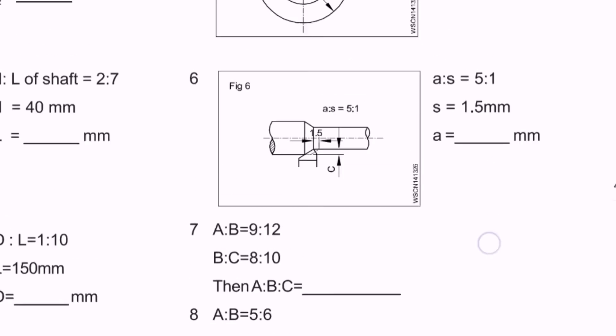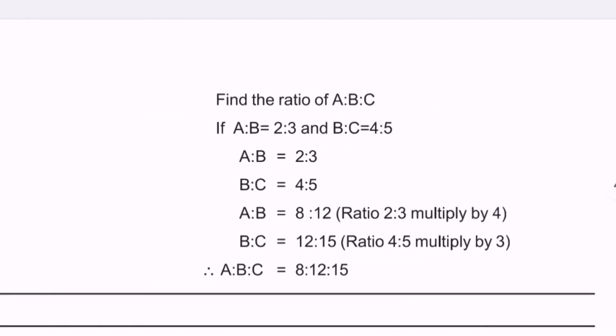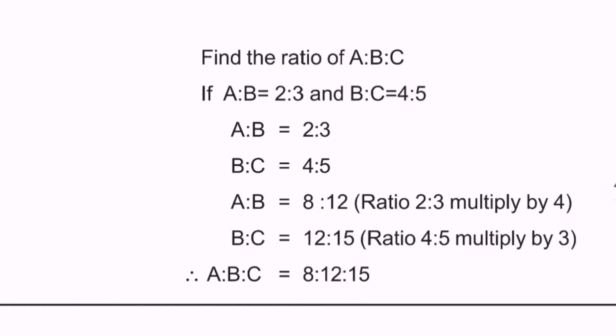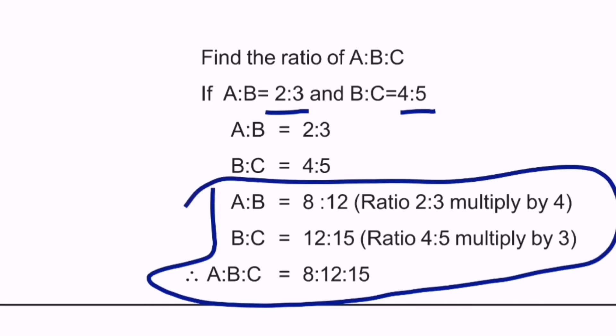Question number seven, which we covered in last class. If A:B is 2:3 and B:C is 4:5, then find A:B:C. A:B equals 2:3 and B:C equals 4:5. We need to find A:B:C.